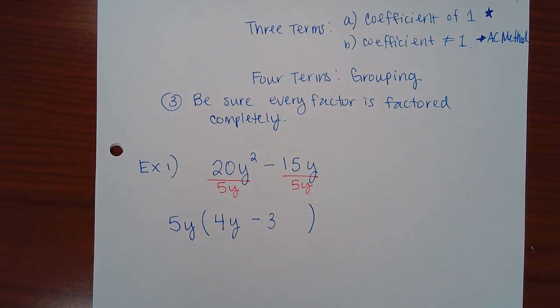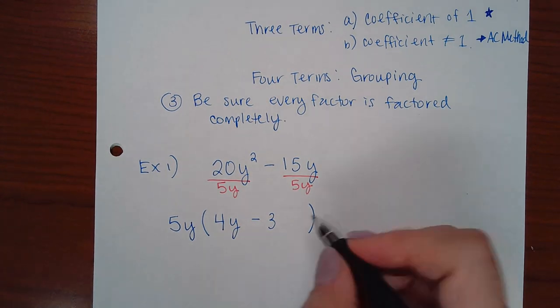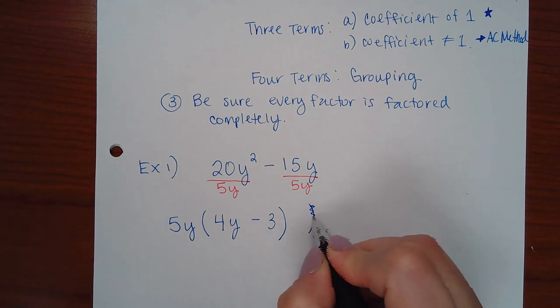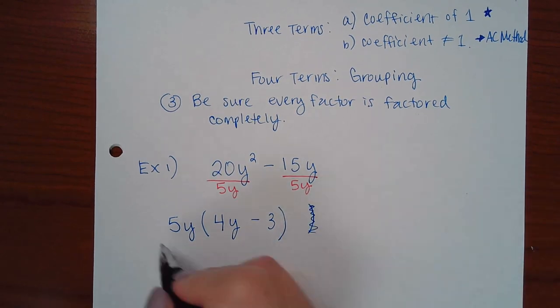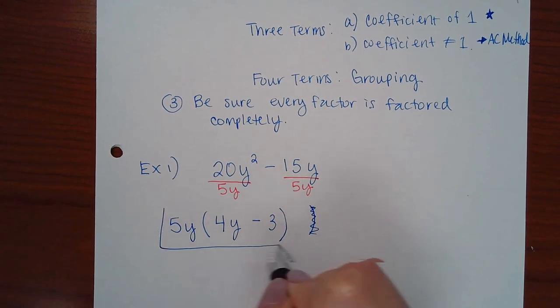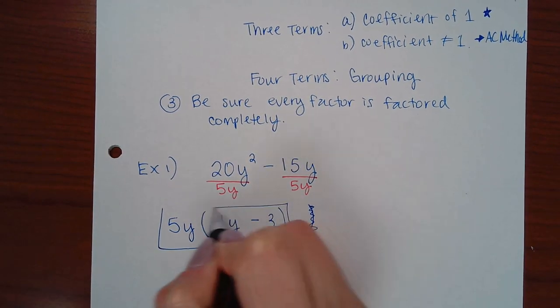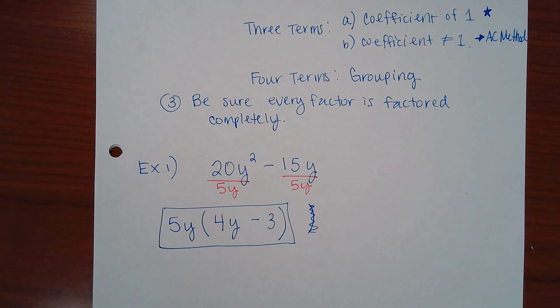The GCF comes outside the parentheses, and to find what goes inside, divide each term by the GCF. So 20 ÷ 5 = 4y², and 15 ÷ 5 = 3, while y ÷ y cancels. The final answer is 5y(4y − 3).